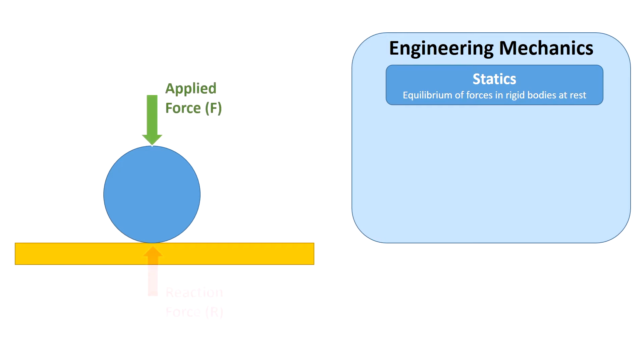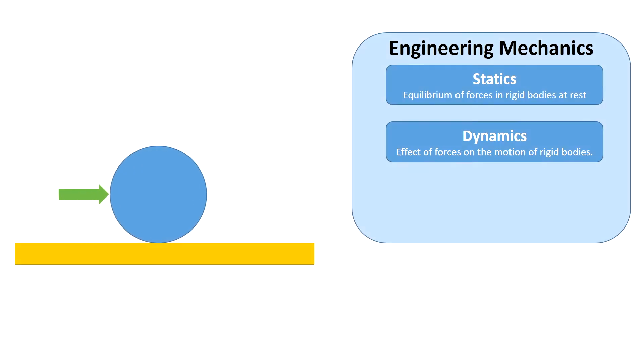Statics discusses the equilibrium of rigid bodies while at rest. Dynamics discusses the effect of forces on the motion of rigid bodies. In both statics and dynamics, objects are assumed to be rigid, which means any change of size or shape due to forces is neglected.